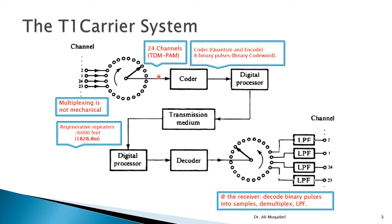The receiver does the opposite — getting the signal back into TDM form and performing demultiplexing. The decoder decodes the binary pulses into samples, and demultiplexing routes every pulse to the right channel. If user one is communicating with user one, pulses are demultiplexed back to the correct users. For detailed explanations of demultiplexing, sampling, and quantization, see separate videos. At the transmitter we have coding and multiplexing; at the receiver we do the opposite — decoding and demultiplexing.